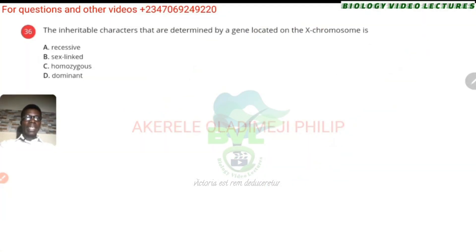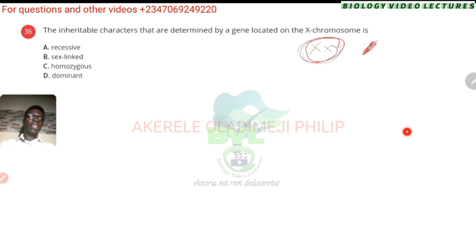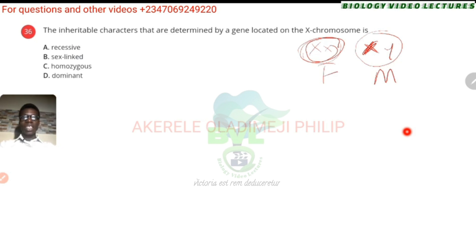Inheritable characters that are determined by a gene located on the X chromosome — remember we have XX as sex chromosomes in females, while males have XY. The answer to this is sex-linked — B. Sex-linked chromosomes, sex-linked diseases.